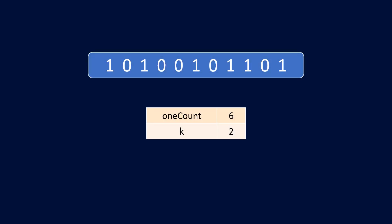The first step is to find the number of 1s present in the array. For this particular example, we have six 1s and each partition should contain two 1s, so the value of k is 2.